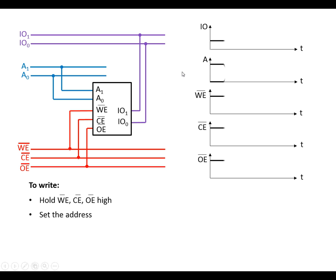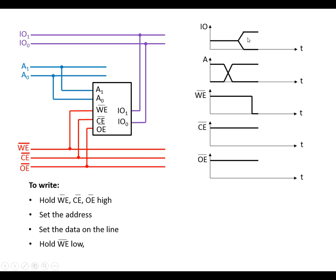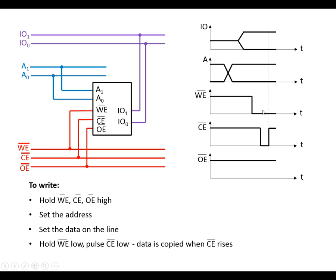To write, first set the address we're going to write to, then set the data lines — which can be either high, low, or any combination. Then hold write enable low to indicate a write operation, and pulse chip enable low. In some books the chip enable is held low first and then write enable is pulsed — either way works.